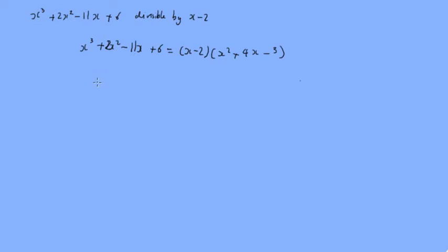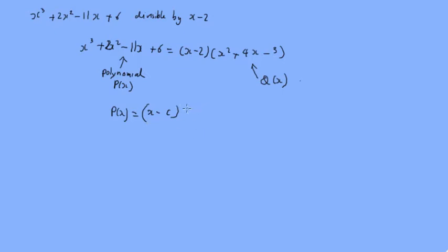Now let's say that our polynomial is p of x, and the quotient is q of x. If we have a general polynomial p of x that has a factor x minus c, where c is some constant term, and its quotient is q of x, then if x equals c, p of c equals 0. This is the factor theorem.